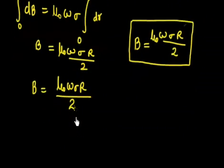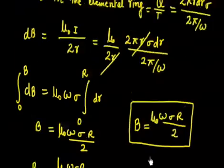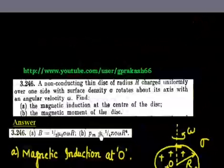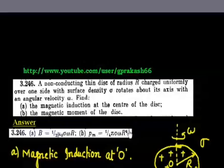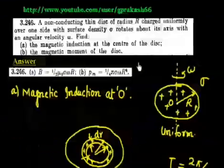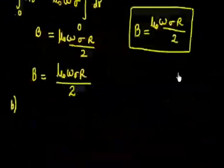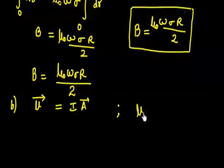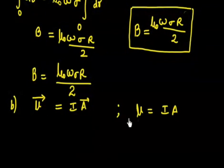The next part asks us to calculate the magnetic moment of the disc. Magnetic moment is a property of the disc itself, not at the center. Magnetic moment μ = I × A.